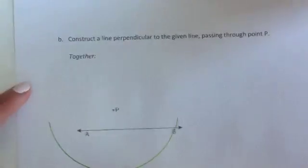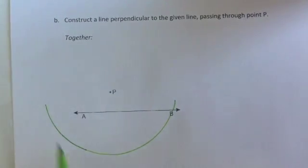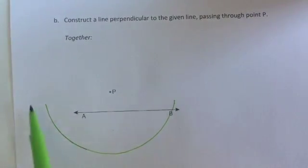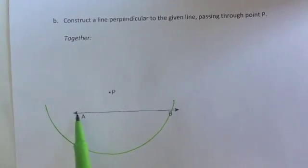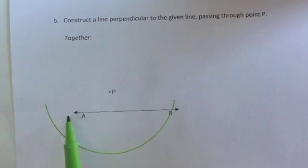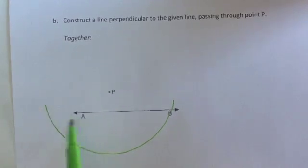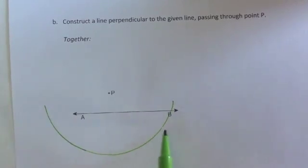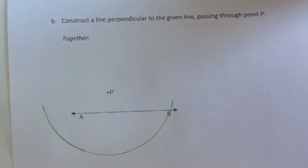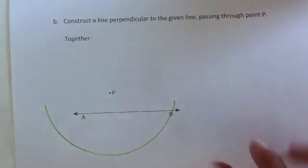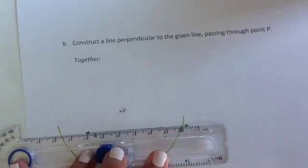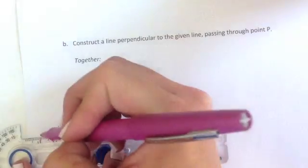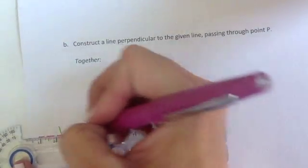You can see here that I kind of did this purposely so that you would have an example where sometimes your arc goes way past your line. But notice that this arrow on here means that AB extends infinitely. It extends infinitely beyond A and infinitely beyond B. So you are allowed to extend your line. All I'm going to do is line my straight edge up with the given line and just extend it.